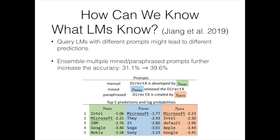A follow-up paper asks: how can we know what language models know? The approach is to use more diverse prompts by either mining Wikipedia articles or paraphrasing initial prompts with a back-translation model. For the developer relation, the manual prompt is "X is developed by Y"; the mined prompt becomes "Y released the X"; the paraphrase prompt becomes "X is created by Y." Using these mined and paraphrased prompts, the model correctly predicts Microsoft at rank one. Assembling predictions from multiple prompts through a weighted sum leads to further accuracy improvements.